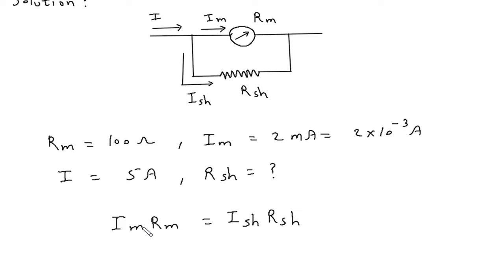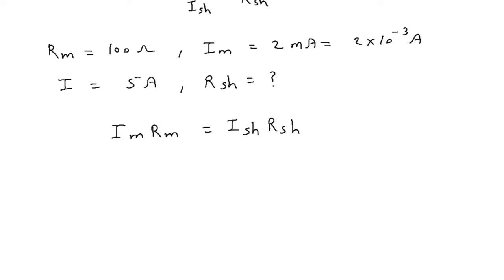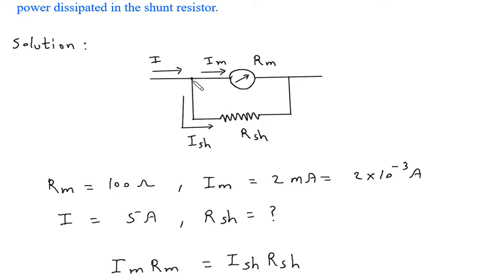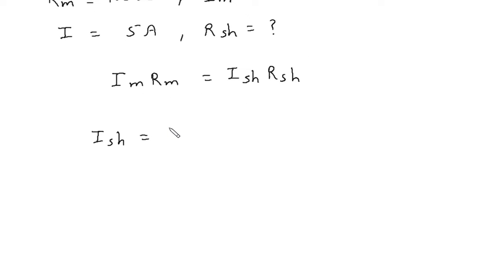Now we also need the value of Ish. Using KCL, if we apply KCL, the summation of current entering a node is equal to the summation of all the current leaving a node. So I is equal to Im plus Ish. Therefore, Ish is equal to I minus Im.